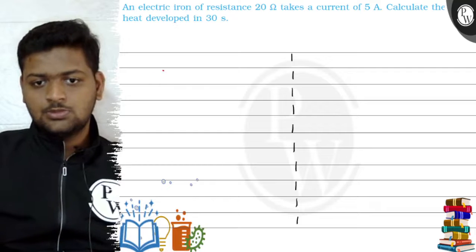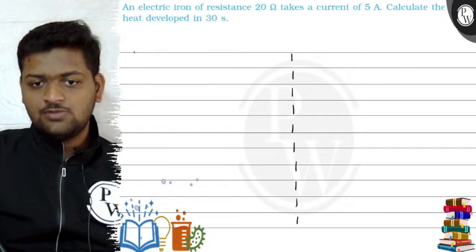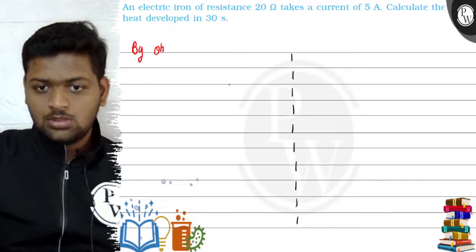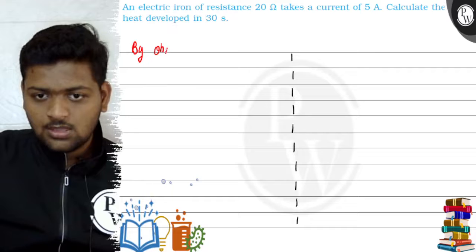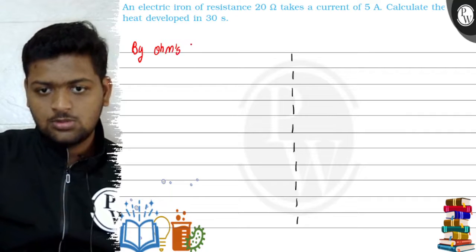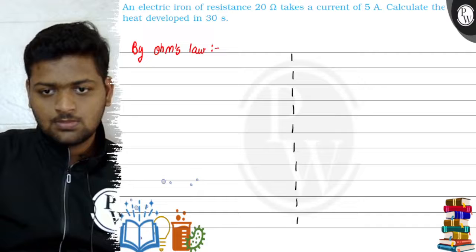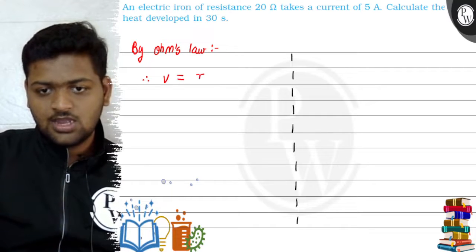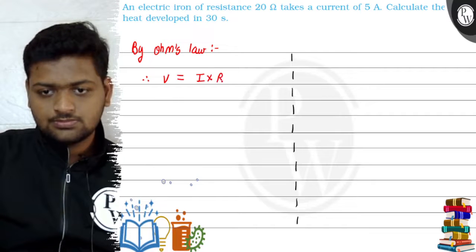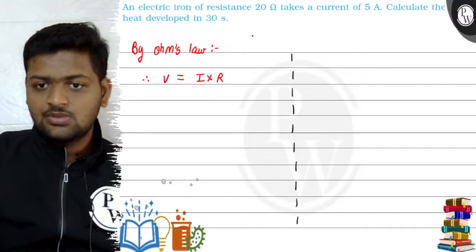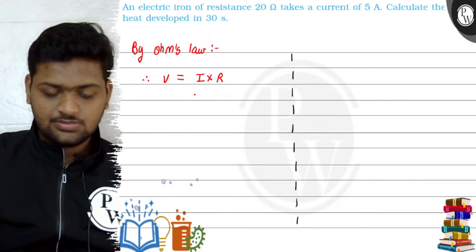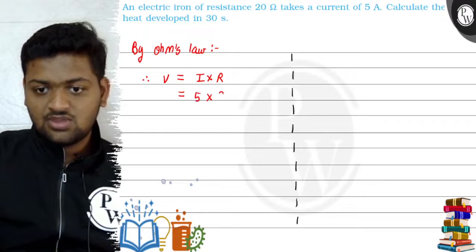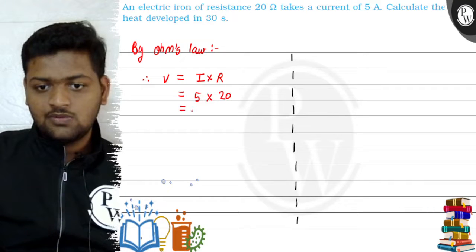Okay, so what we will do is first of all we will apply Ohm's law. So by Ohm's law we know that V is equal to I into R, right? Now we are given with resistance and current, so we will put those values: that is 5 ampere is current and 20 ohms is resistance. We get 100.